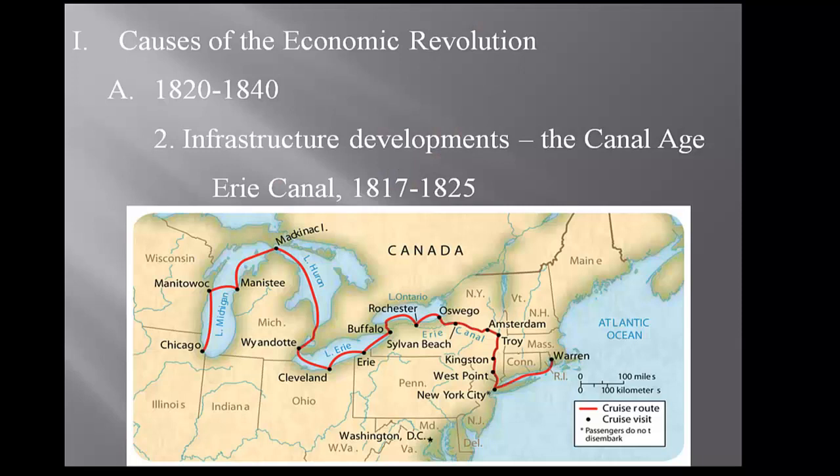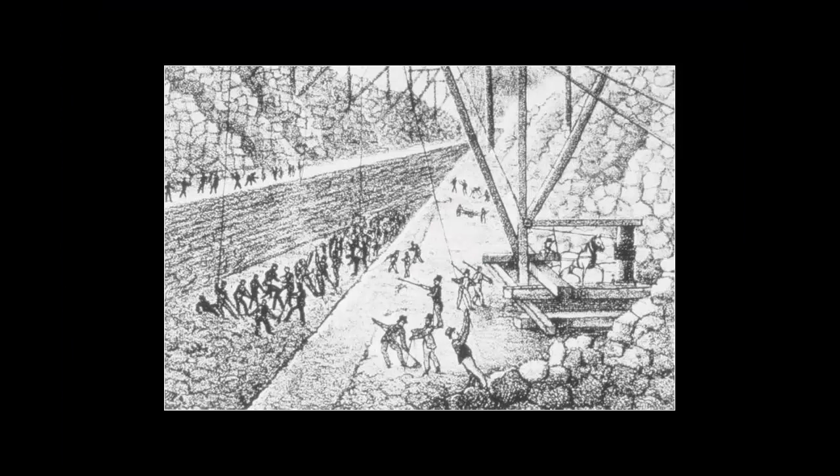A governor by the name of Clinton came up with the idea. He sells it to the state up in Albany and convinces state legislatures that they should put money into this project. They're going to use the Hudson River as it flows up, and then at Amsterdam, Troy, they're going to build a canal that connects to the Erie River, which will get them out to Lake Erie. From the lakes they could have more canals. It's going to cost a lot of money, but he convinces the wealthy and rural people of New York that this is a great project, and so it goes forward.